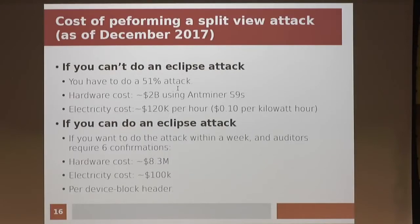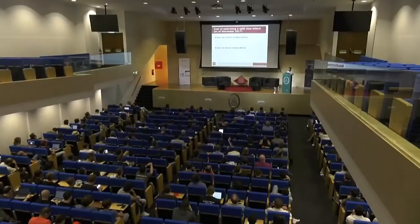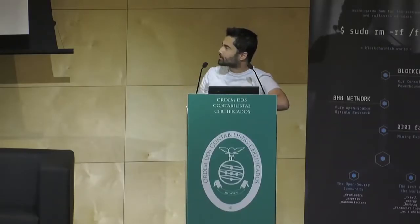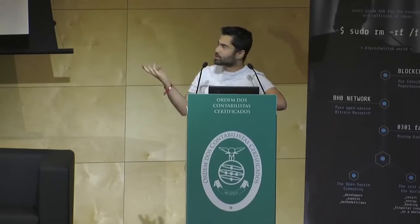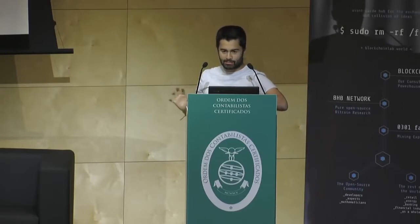From an economic security perspective, what would it cost to attack this system? If your local network isn't malicious and you can connect to real Bitcoin nodes, you'd need to do a 51% attack to reverse transactions or equivocate the chain—obviously prohibitively expensive. Assuming Antminer S9s at retail price, it would cost $2 billion in hardware and about $100,000 per hour in electricity, assuming 10 cents per kilowatt hour.